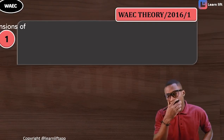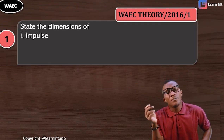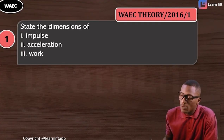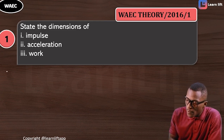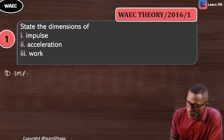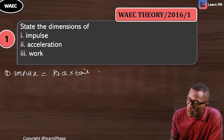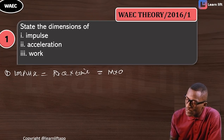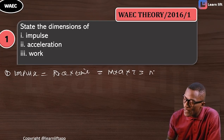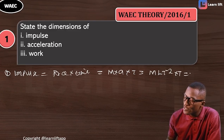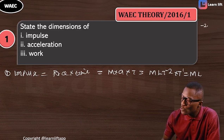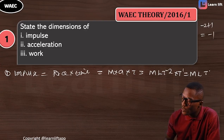Theory question 2016, Question 1, Question 6 states the dimensions for impulse, for acceleration, and for work. Let's start with number one: impulse. The formula for impulse is force times time. Force is mass times acceleration, and time is T. So in dimensions: mass is M, acceleration is LT⁻², and time is T. In indices this becomes MLT⁻²⁺¹ = MLT⁻¹. So that's the dimension for impulse.